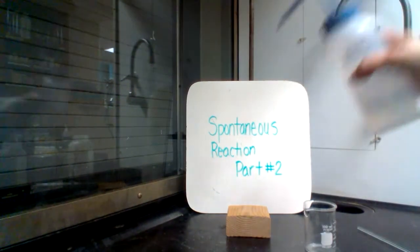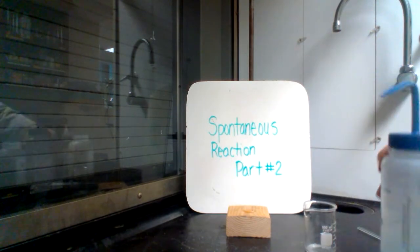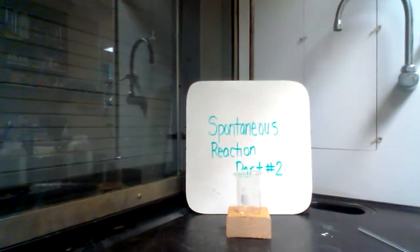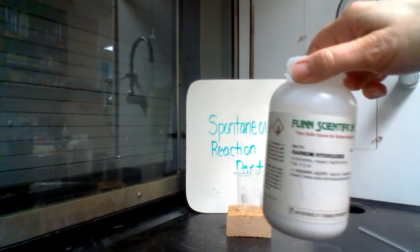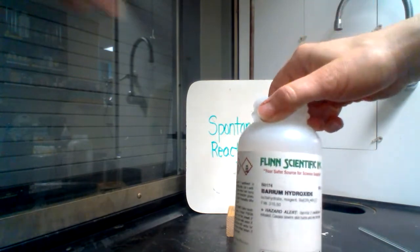Before I start the lab, however, I'm going to squirt some water on the wooden block where I will place my small beaker. I'm then going to take approximately 30 grams of each of the white solids.